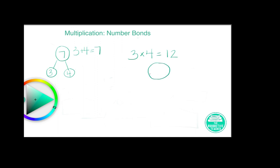So I'm going to draw the top of my number bond first. Now, my first factor is going to show me how many legs. So this number bond needs to have three legs. And my second factor is going to show me how many in each leg. So I'm going to put a four in each leg.